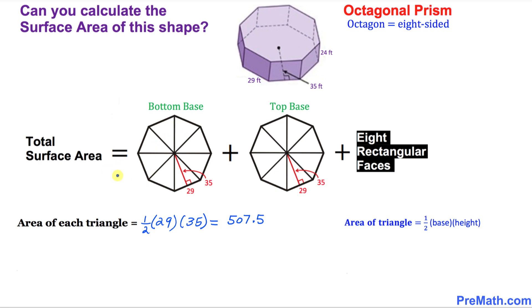Since there are eight of them, I'm going to multiply 8 times 507.5. And that is going to give us 4060. So the total area of this octagon turns out to be 4060. Since this one, look at this one, the second octagon is exactly the same. So this is going to have the area as 4060 as well.